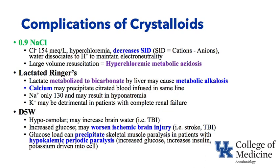Some complications of crystalloids: 0.9% normal saline has chloride at 154 milliequivalents per liter — that's hyperchloremic. The strong ion difference is defined as positively charged cations minus anions in the body. Giving a large amount of chloride (an anion) decreases the strong ion difference, and water dissociates to hydrogen ions to maintain electrical neutrality. The result: large-volume resuscitation with saline — say 10 liters — can result in hyperchloremic metabolic acidosis.